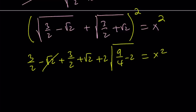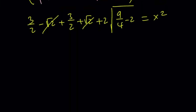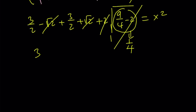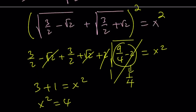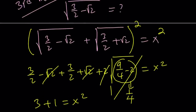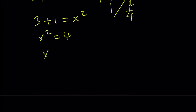The √2 terms cancel out, and 3/2 + 3/2 = 3. Also, 9/4 minus 2 = 1/4, and √(1/4) = 1/2, so 2 times 1/2 = 1. This becomes 3 + 1 = x², so x² = 4. Since x is a positive quantity, x = 2.